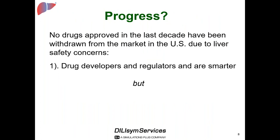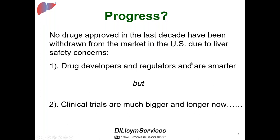The FDA is proud that in a decade and a half, no drugs approved in the U.S. have been permanently withdrawn due to liver safety concerns. In part, that's because drug developers and regulators are smarter. But in reality, the FDA is now demanding larger clinical trials whenever there's any liver safety concern, unless the drug meets an overwhelming unmet medical need. This has resulted in many examples where development was delayed or restructured.